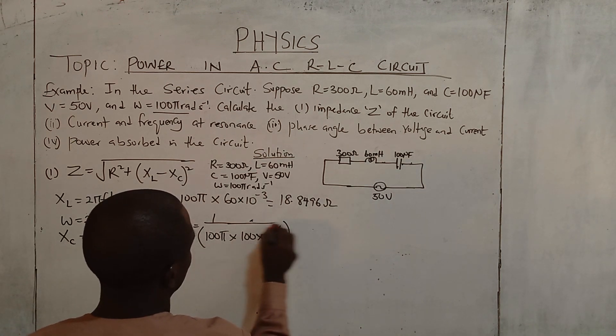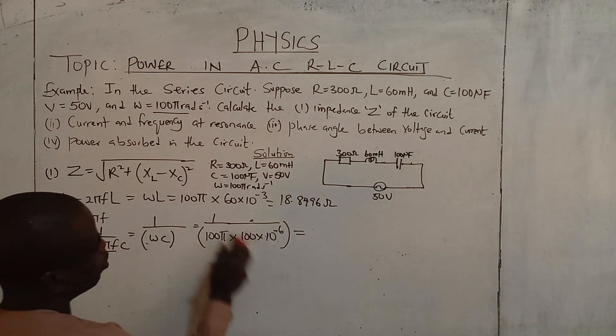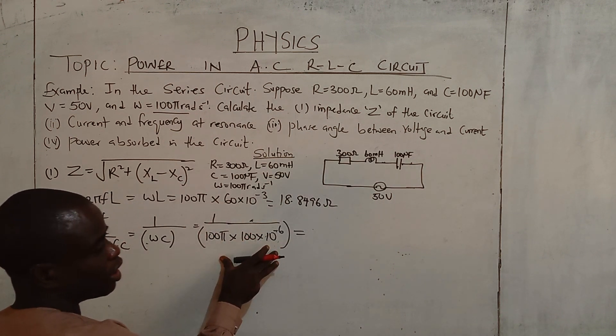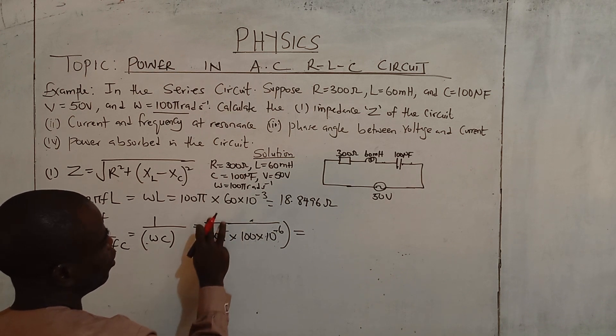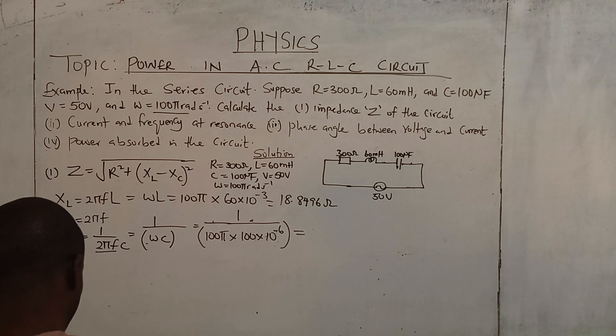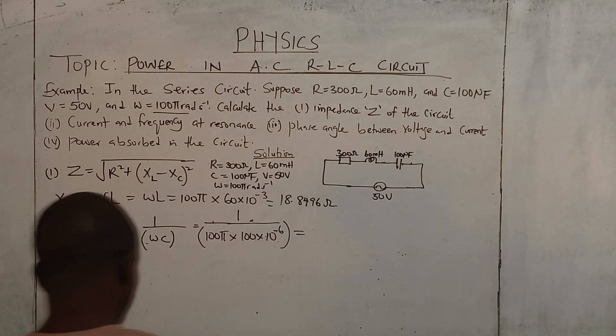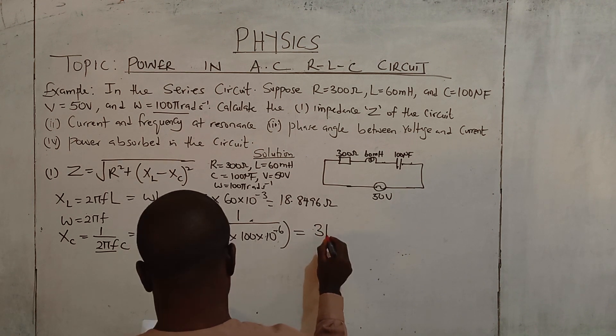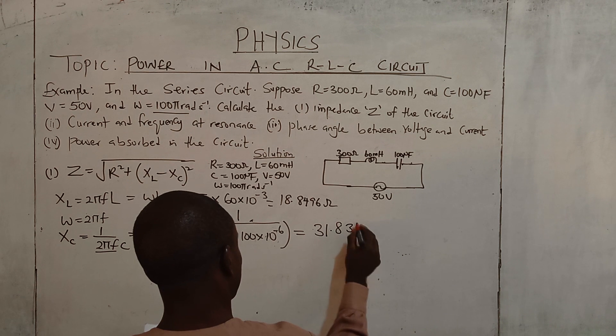Now we are pressing the calculator. Be sure you put the bracket so that the 1 will divide all. Now we press the calculator for that. We have 31.831 ohms.